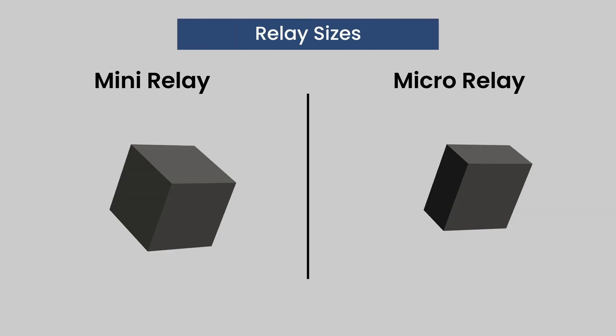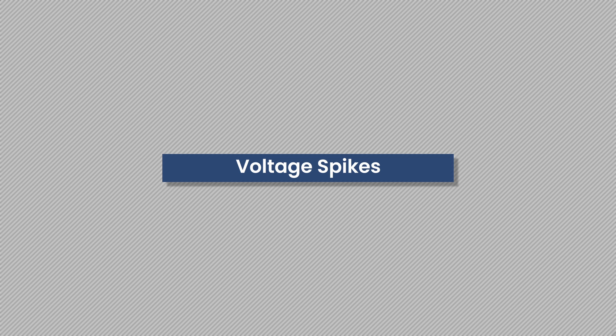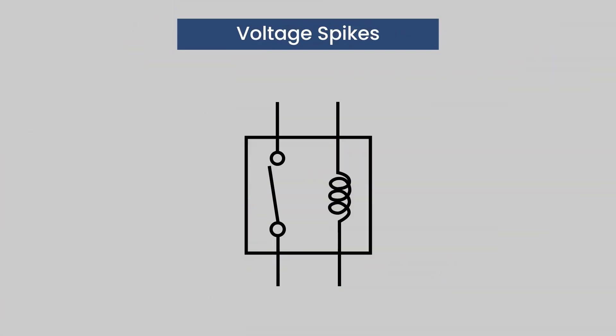Relays come in two sizes: micro and mini. Mini is 2.5 square centimeters and micro is 2.5 by 2.5 by 1.25 centimeters, which is half as thick as the mini relay. Voltage spikes: when the switch is closed, current flows through the coil from positive to negative and in turn creates a field around the coil.